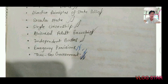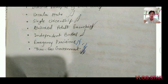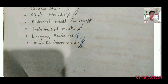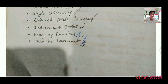India has single citizenship — there is only Indian citizenship, not state-level citizenship. There is also Universal Adult Franchise at 18 years of age. Independent constitutional bodies like the Election Commission of India and UPSC are enshrined in the Constitution. Emergency provisions include national emergency, state emergency, and financial emergency, which are in the hands of the President. There is also a three-tiered government: central level, state level, and panchayat level.